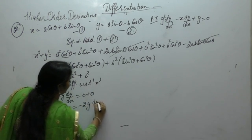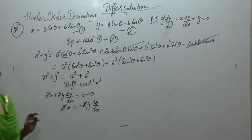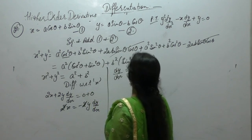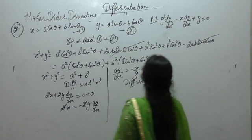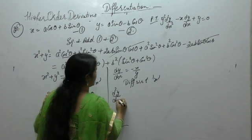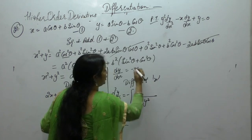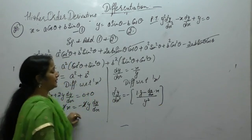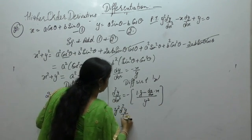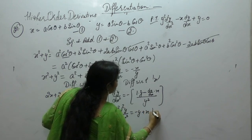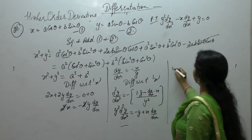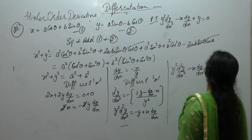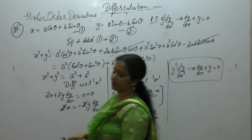So 2x equals minus 2y(dy/dx), and dividing by 2 we get dy/dx equals minus x upon y. Now differentiate again with respect to x using the quotient rule. After applying u/v rule and rearranging, y² goes to the left hand side, giving y² d²y/dx² minus x(dy/dx) plus y equals 0.